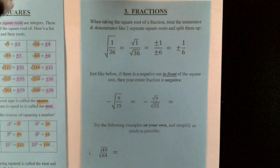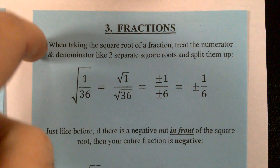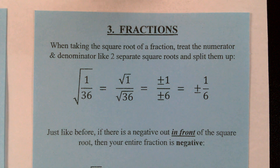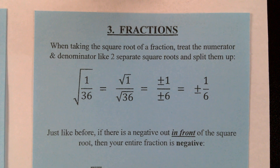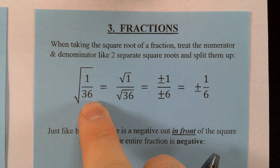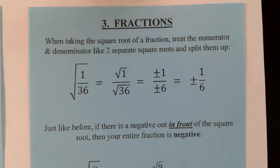Let's take a look at note sheet number 3 — we're going to talk about fractions. If we understood note sheets 1 and 2, this is going to feel obvious. When taking the square root of a fraction, treat the numerator and denominator like two separate square roots and split them up. So the square root of 1 over 36 turns into the square root of 1 over the square root of 36, and we can evaluate these square roots individually.